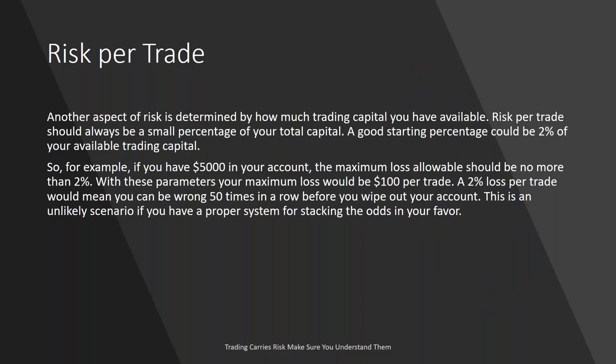Understanding the different types of order execution in Forex is very important because too many traders trade what we call market orders — they go to the website, see the euro-US dollar trading at 120.142, and click buy or sell. The market will execute that order at the most appropriate price it can. That's a dumb way to trade. You also have what we call limit orders, which are orders where you set the limits. You set a price at which you want to enter the market, and when that price is achieved the system will automatically execute your trade.